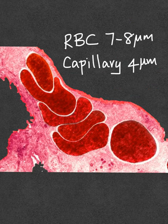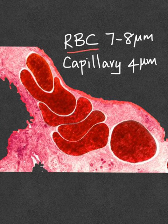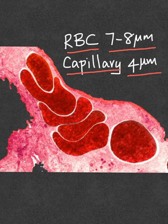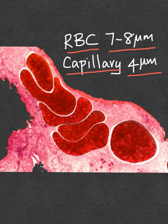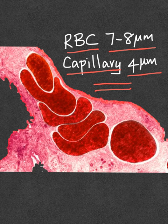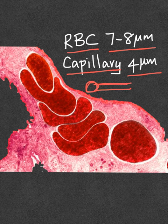The average size of an RBC is 7 to 8 micrometers whereas the diameter of the smallest capillary is around 4 micrometers. Notice this great difference. The blood has to pass through small capillaries which are around 4 micrometers in diameter, and the RBCs which are 7 to 8 micrometers in diameter have to pass through these small 4 micrometer capillaries.